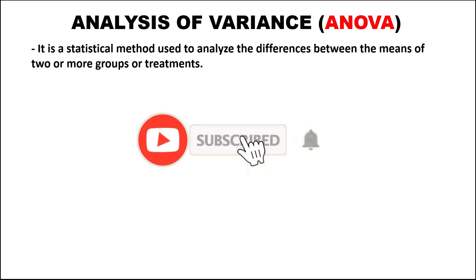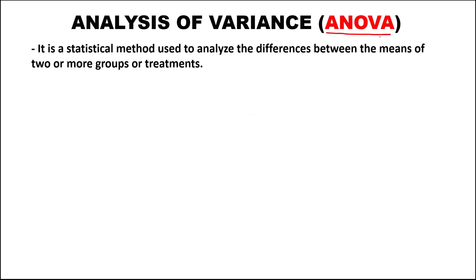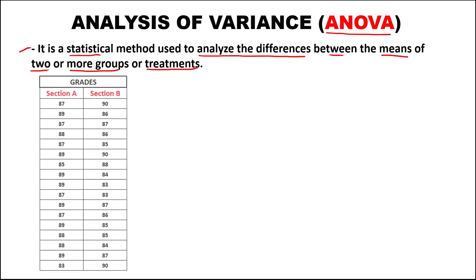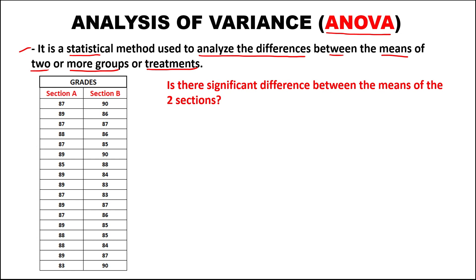Let's have this problem. For this analysis of variance, or ANOVA, this is a statistical method used to analyze the difference between the means of two or more groups or treatments. So if we have this given sample data — the grades of section A and section B — we need to answer whether there is a significant difference between the means of these two sections.